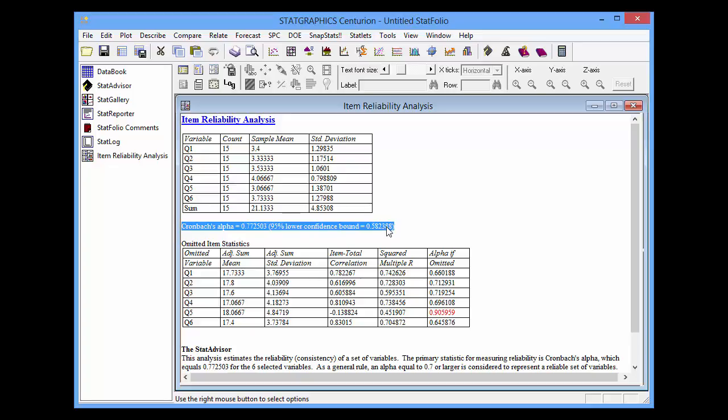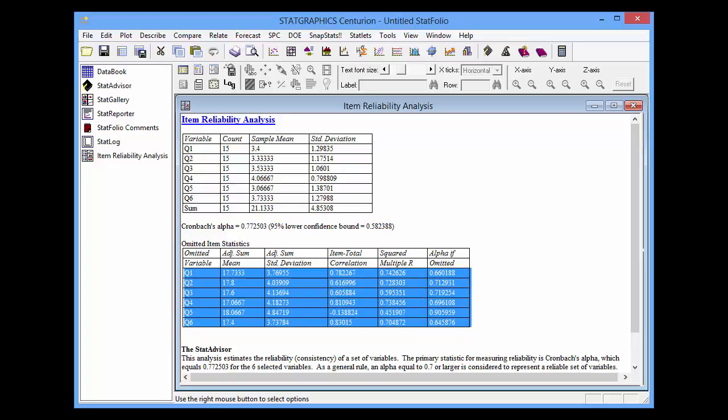In the second section of the table, you'll see statistics calculated by individually removing each of the variables from the survey, one variable at a time. In the far right column, it calculates the value of alpha if, in fact, that one question had been omitted.